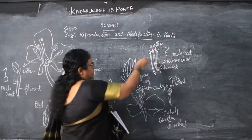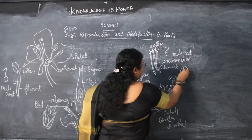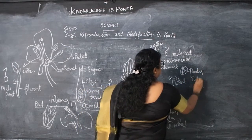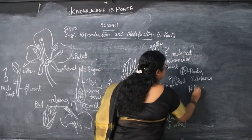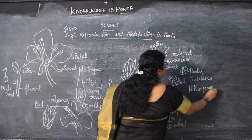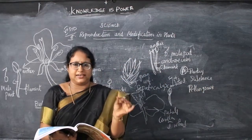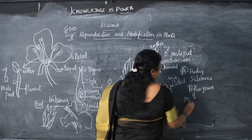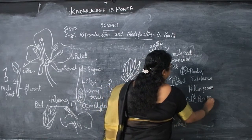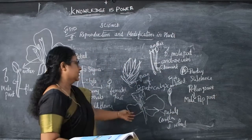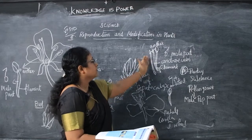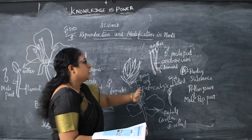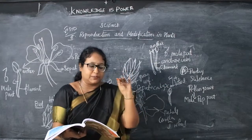If you take the anther, inside it you have a powdery substance called pollen grains. When you touch the anther, you find this powdery substance. This is the male reproductive part.